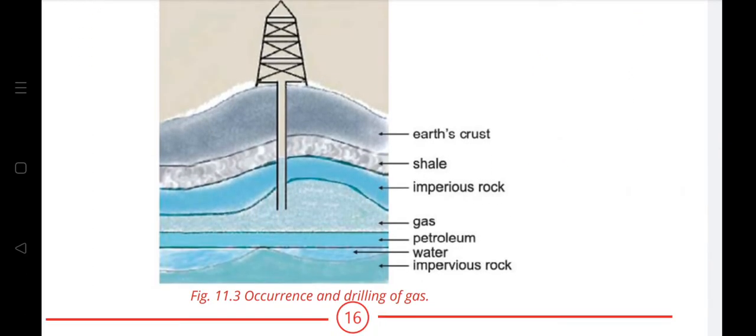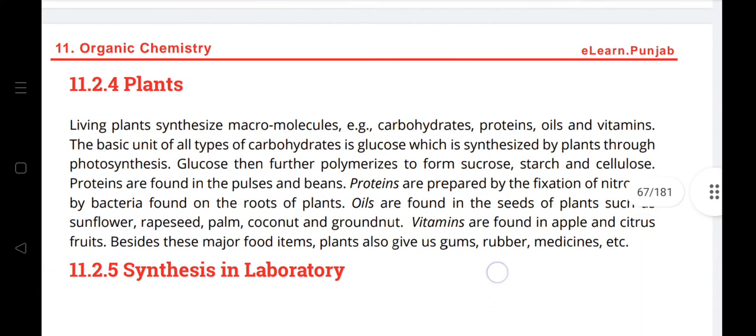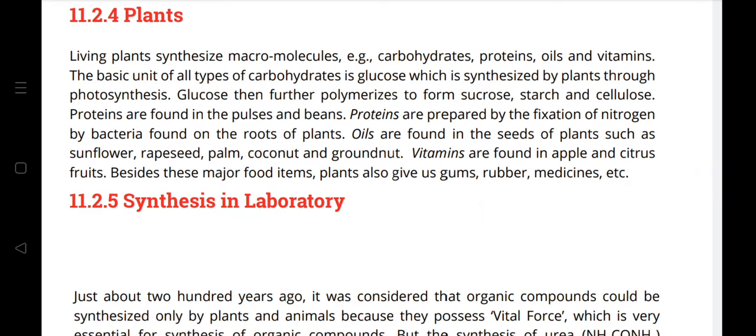Figure 11.3 shows the occurrence and drilling of natural gas, also called sui gas. Living plants synthesize macromolecules such as carbohydrates, proteins, oils, and vitamins. The basic unit of all carbohydrates is glucose, which is synthesized by plants through photosynthesis. Glucose polymerizes to form sucrose, starch, and cellulose. Proteins are found in pulses and beans, prepared by nitrogen fixation by bacteria on plant roots. Oils are found in seeds of sunflower, rapeseed, palm, coconut, and groundnut. Vitamins are found in apples and citrus fruits. Plants also give us gums, rubber, and medicines.